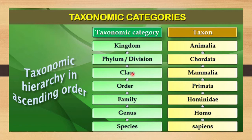Let me go through the categories using the example of a human. The lowest category is species, and the human species is sapiens. The higher category is genus, and the genus of a human is Homo. The family of a human is Hominidae, then order Primata, class Mammalia, phylum Chordata, and kingdom Animalia.